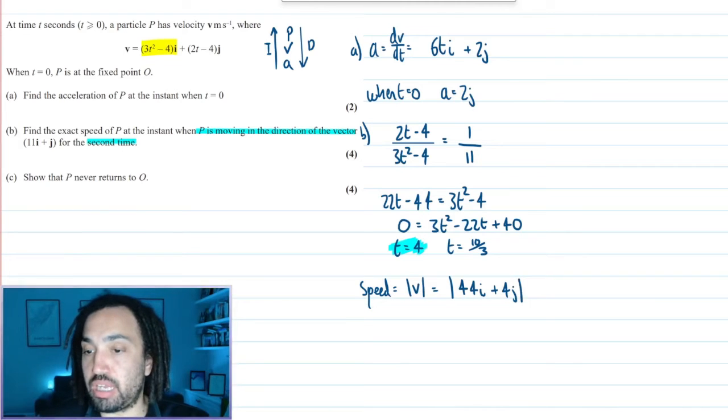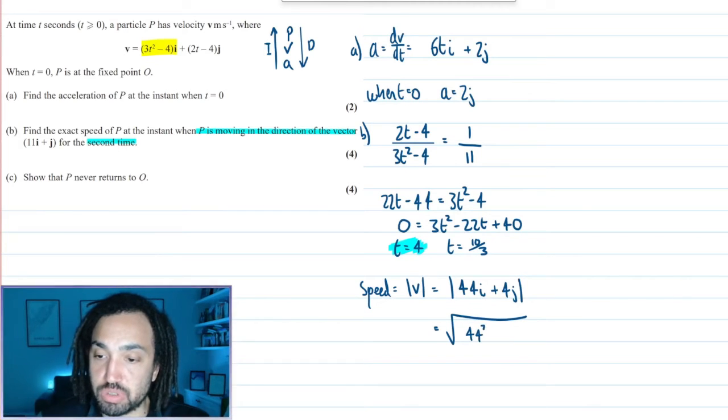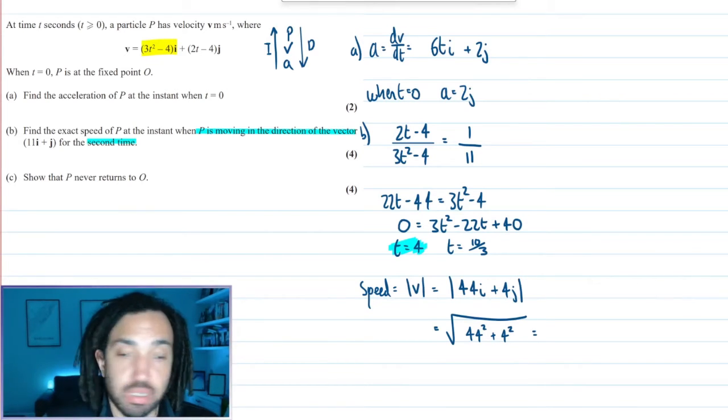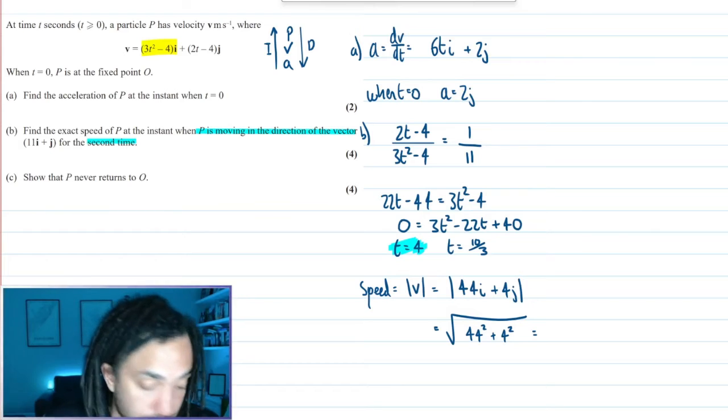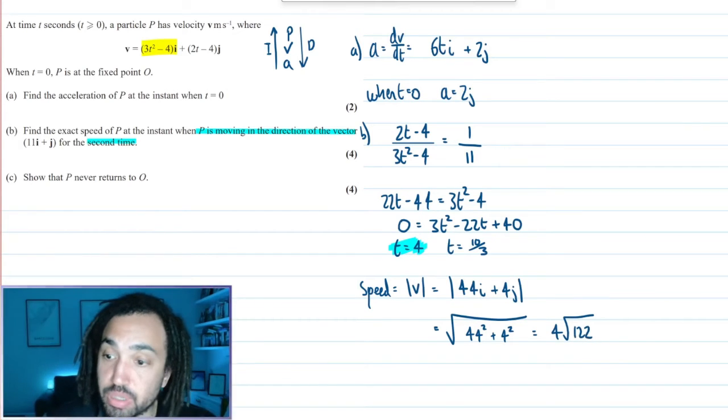And I want to find the magnitude of that. So I do the square root of 44 squared plus 4 squared, and I do that by calculating.